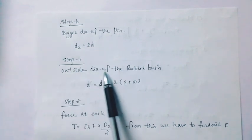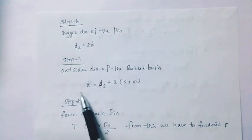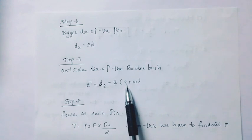Step 7: Outside diameter of the rubber bush. D dash equal to D2 plus 2 into 2 plus 10.